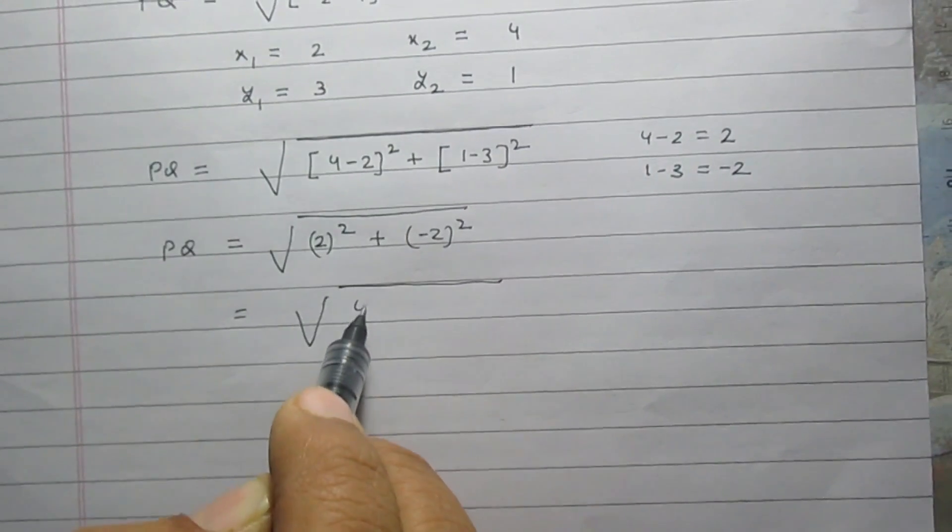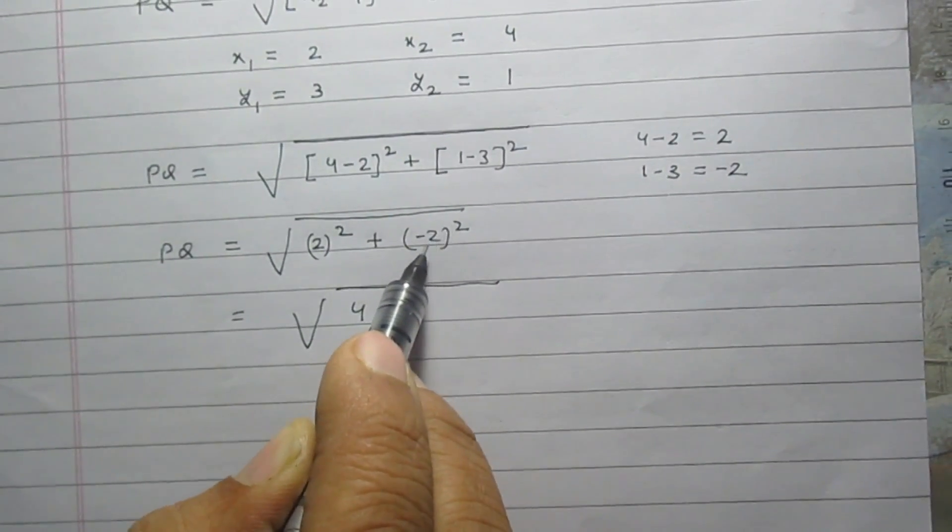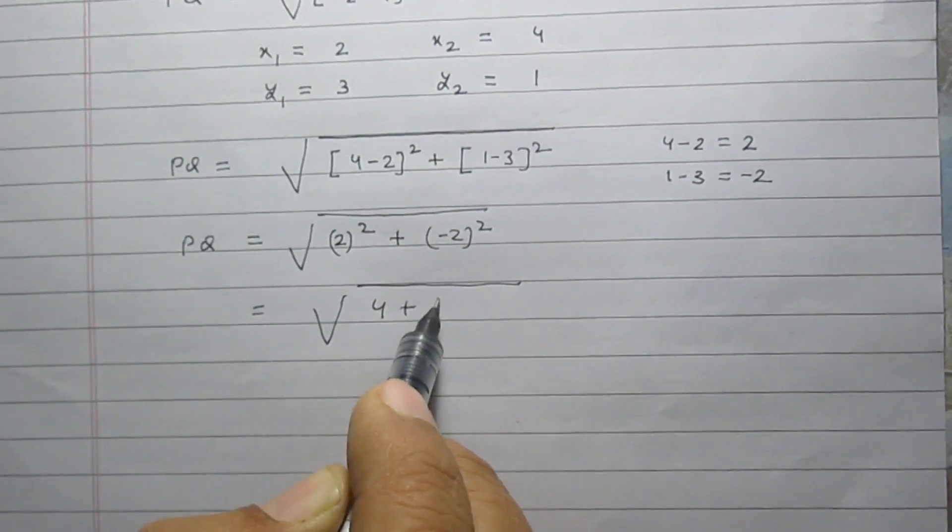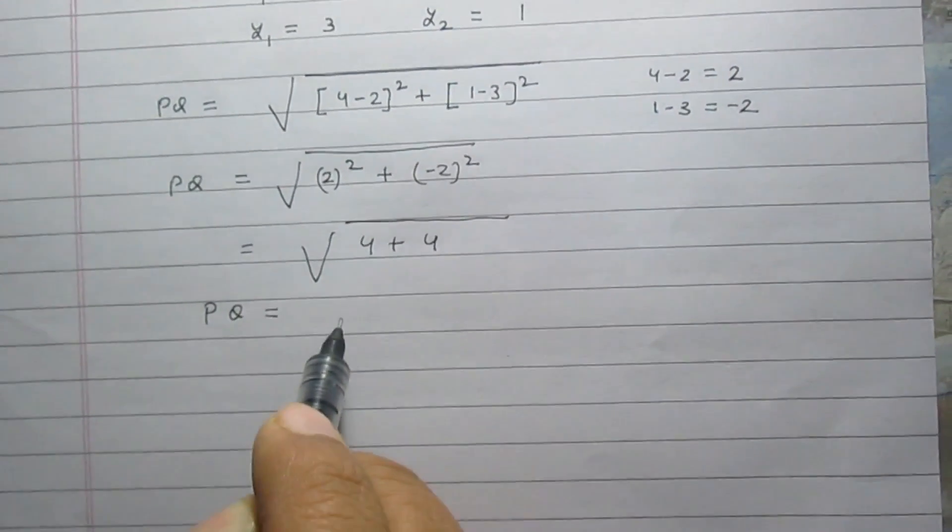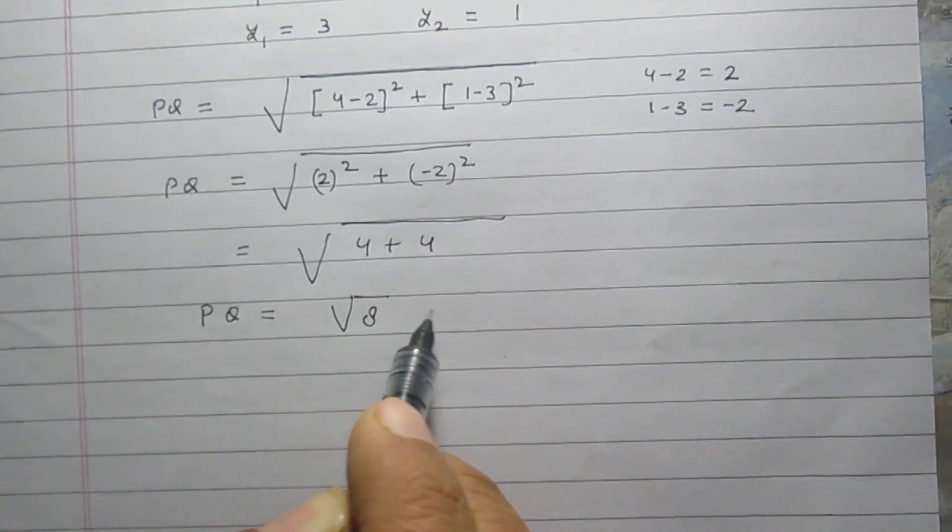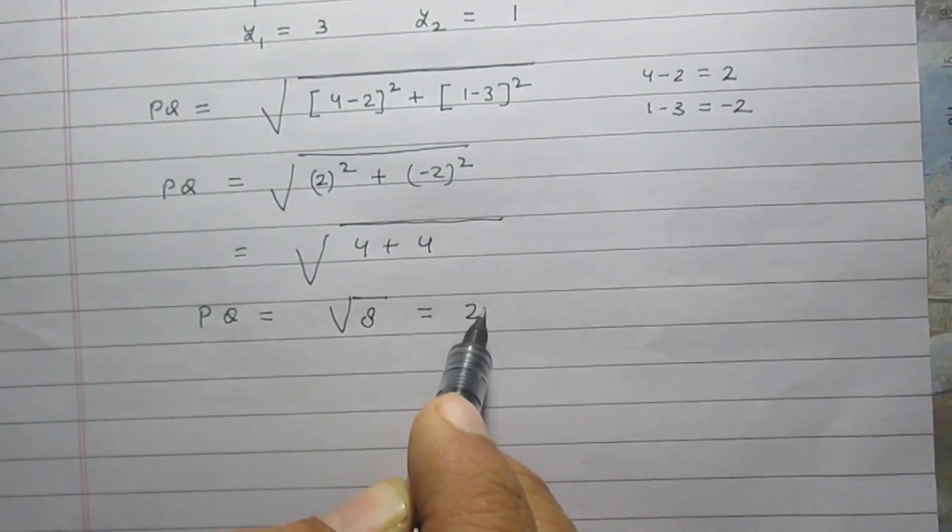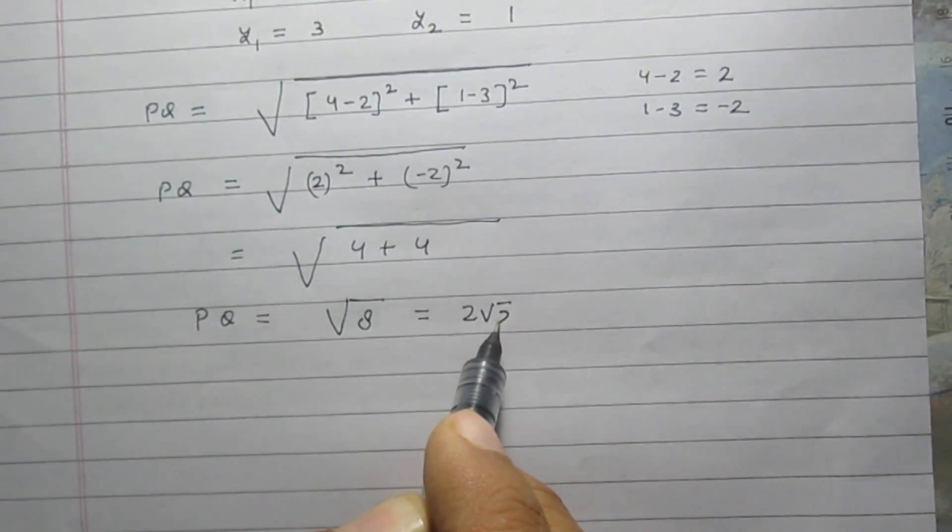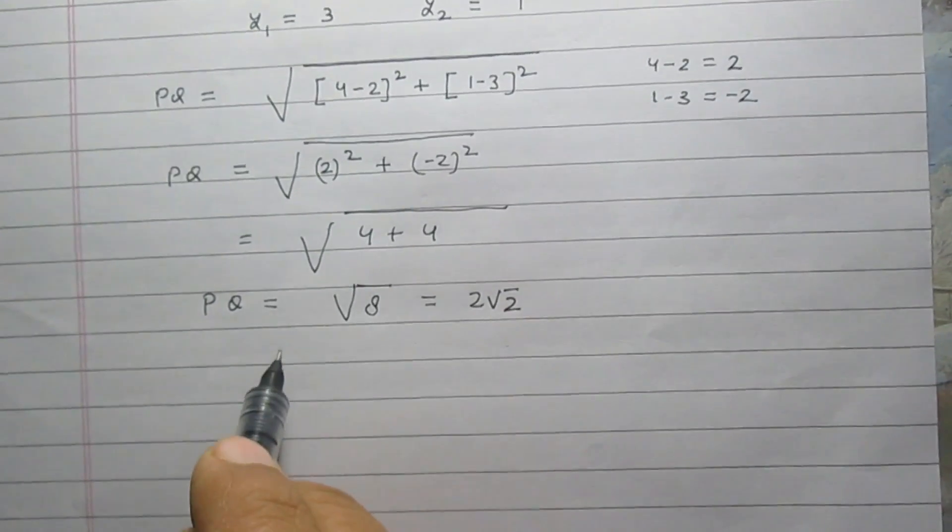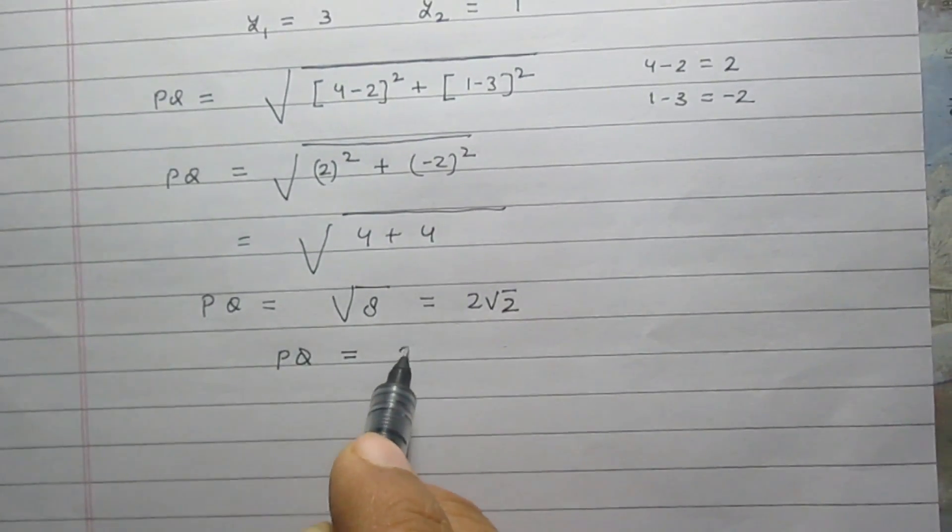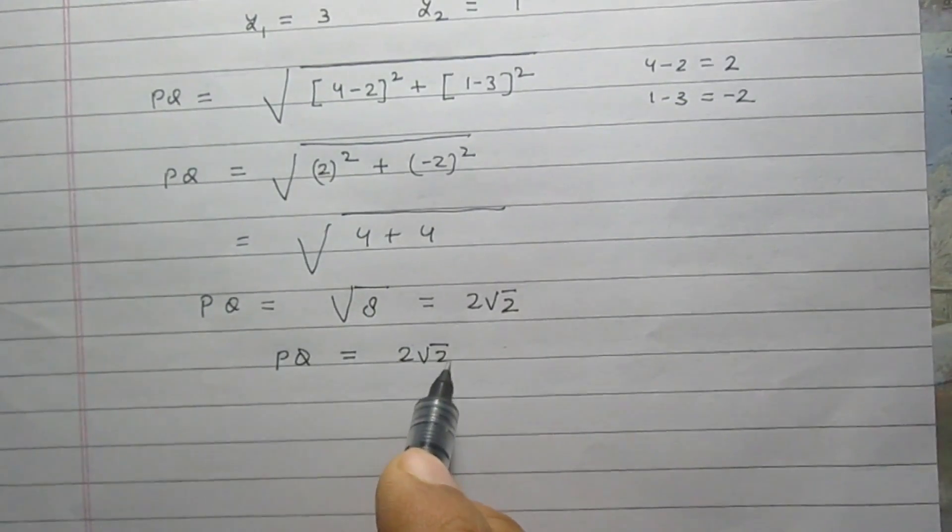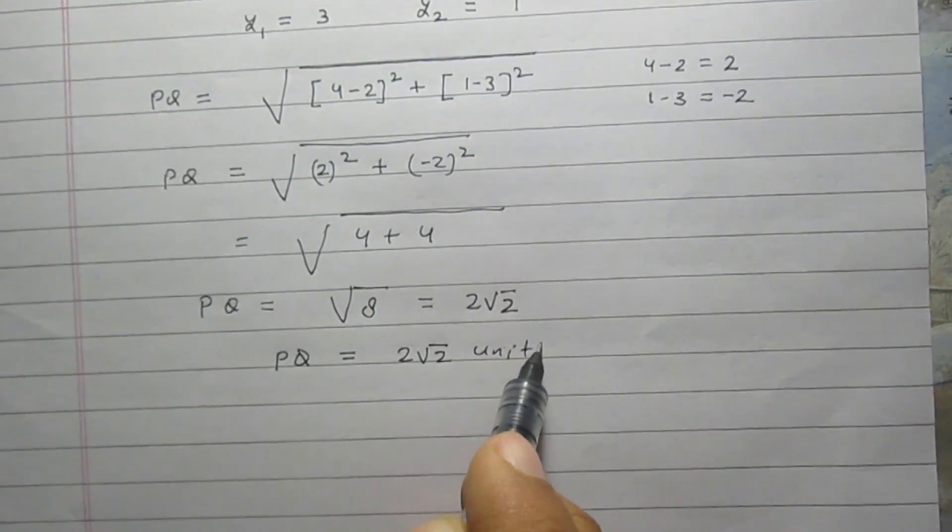The square of 2 is 4 and the square of minus 2 is also 4. So we get PQ equals square root of 8, which equals 2 times square root 2. The distance between points P and Q is 2√2 units.